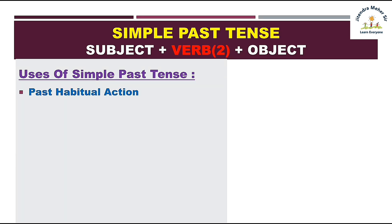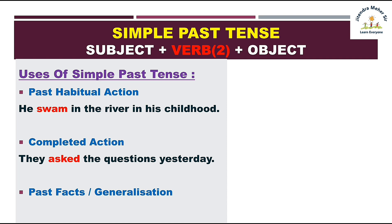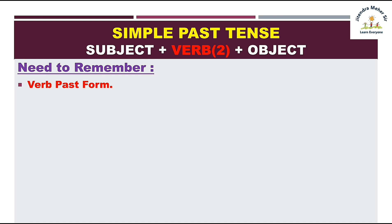Uses of simple past tense. First — past habitual action dikhane ke liye, jaise 'He swam in the river in his childhood' — matlab bachpan mein nadi mein tera karta tha. Past mein baar baar hone wali action dikhane ke liye simple past use hota hai. Second — koi action past mein normally complete hui ho, jaise 'They asked the questions yesterday.' Third — past facts aur generalization ke liye, jaise 'He was shy in his boyhood.'